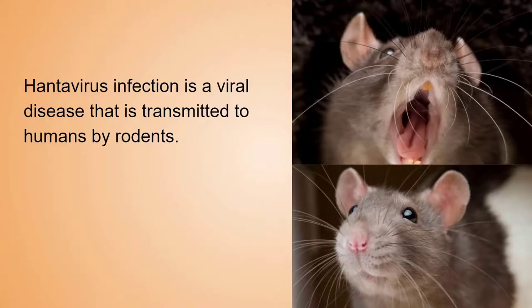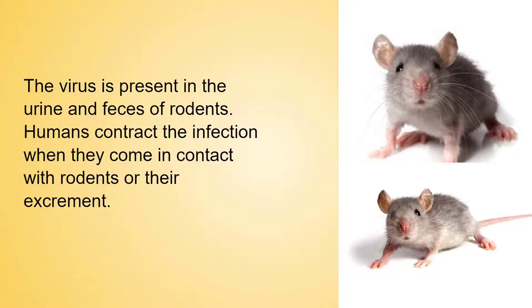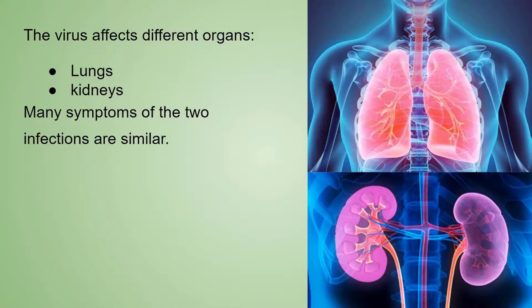Hantavirus infection is a viral disease that is transmitted to humans by rodents. The virus is present in the urine and feces of rodents. Humans contract the infection when they come in contact with rodents or their excrement. The virus affects different organs: lungs and kidneys. Many symptoms of the two infections are similar.